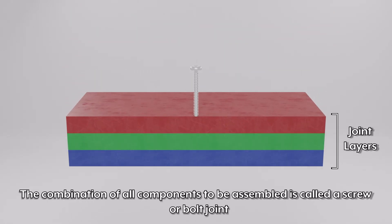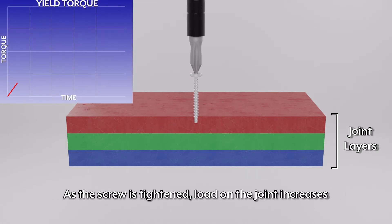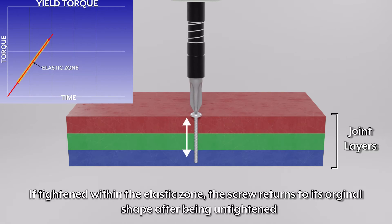The combination of all components to be assembled is called a screw or bolt joint. As the screw is tightened, load on the joint increases. If tightened within the elastic zone, the screw will return to its original shape after being untightened.